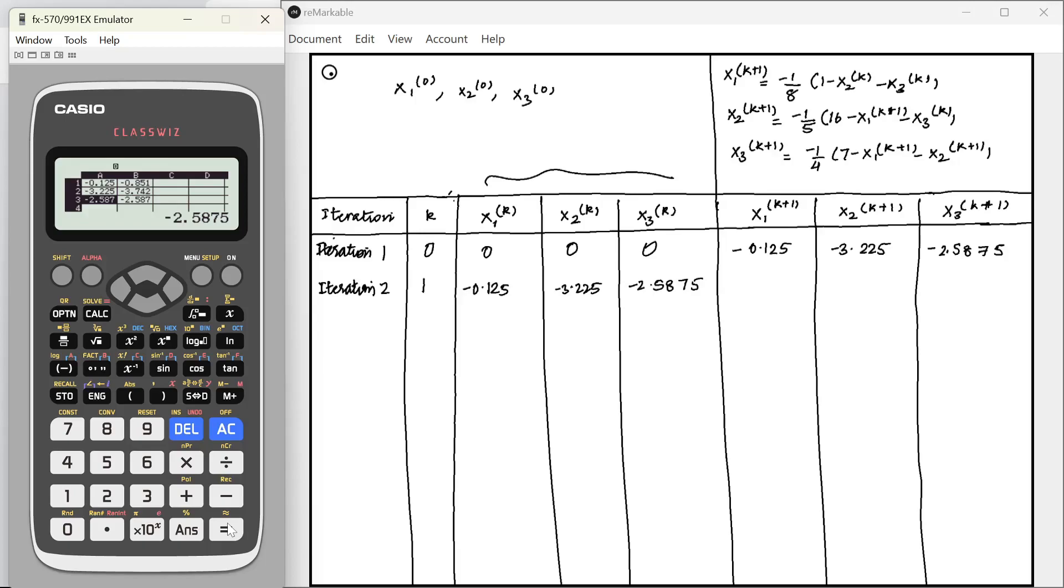We have already got the new value of x1, which is going to be this. I will just copy this here. Alpha B1, alpha B2, alpha B3. These are going to be the new values of x1, x2 and x3. I am just going to copy those down. Minus 0.8516, minus 3.8878, minus 2.9348.